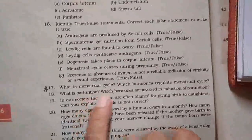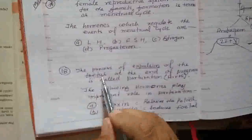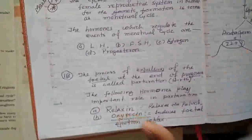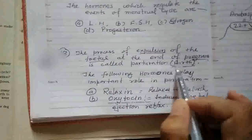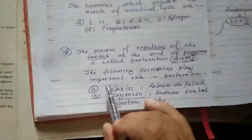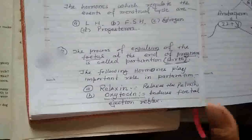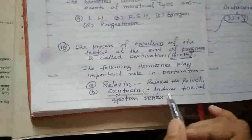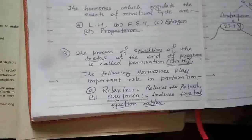Question 18: What is parturition and which hormones are involved in its induction? Parturition is the process of expulsion of the fetus at the end of pregnancy when the pregnancy has matured — it is also called childbirth. The hormones that play an important role in parturition are relaxin, which relaxes the pelvic girdle, and oxytocin, which induces the fetal ejection reflex and helps in parturition.